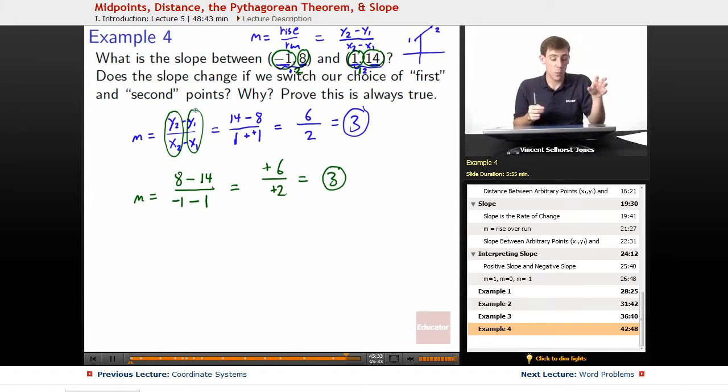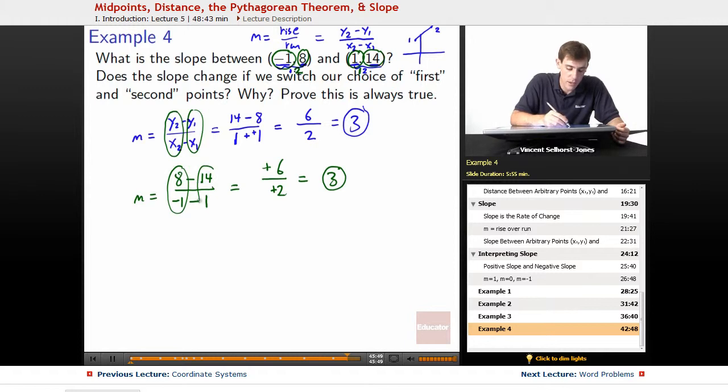If we have one point be the second point on the top, the second y-coordinate, then it has to also be the second x-coordinate. We have to make sure that the points match up vertically. 8 and negative 1, negative 1 comma 8. 14 and 1, 1 comma 14, they match up there.